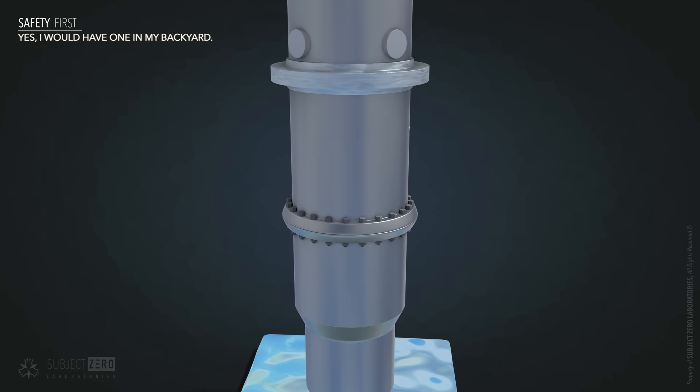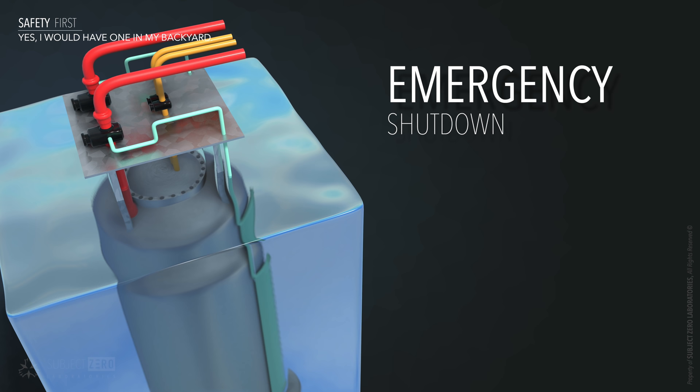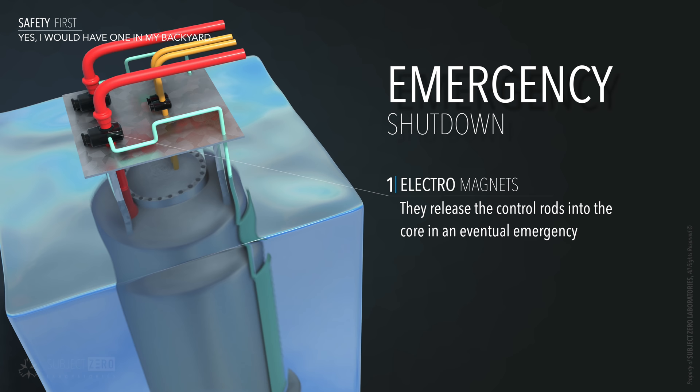Everything is self-contained, especially when it comes to safety. In an emergency, the SMR can shut itself down without any external help and remain cooled indefinitely. This is because the control rods are held up by electromagnets. In the event of complete power loss, the electromagnets stop working, releasing the control rods back into the core, blocking the reaction.